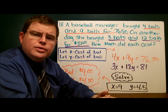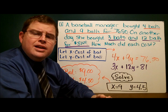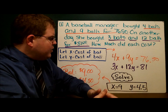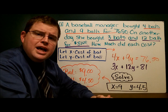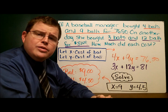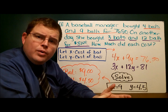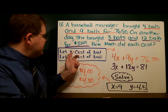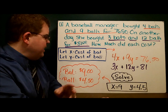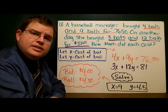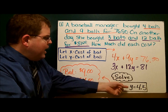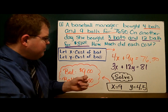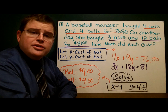When I solve this system, I get x equals 9 and y equals 4.5. What does that mean? Since x is the cost of a bat, a bat costs $9. Y is 4.5, that's the cost of a ball, so a ball is $4.50.